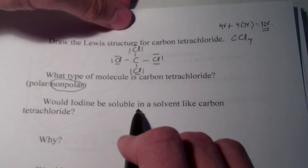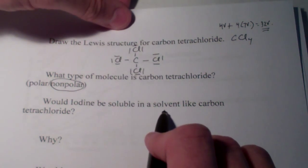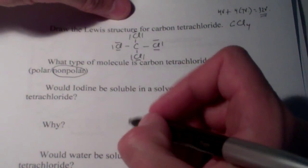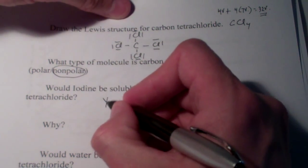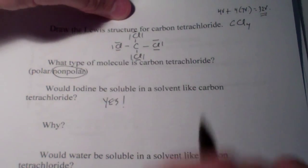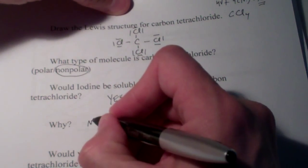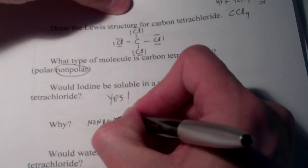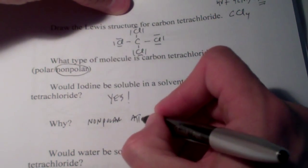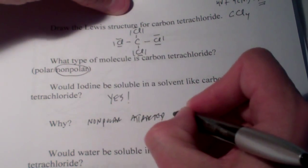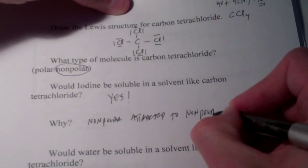So the question becomes, would iodine be soluble in something like carbon tetrachloride? The answer is yes, it is. Why? It turns out that nonpolar molecules are attracted to nonpolar molecules.